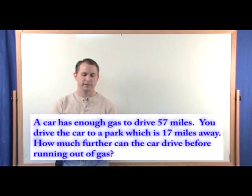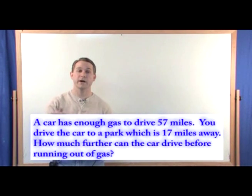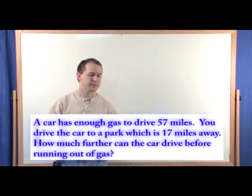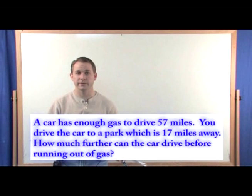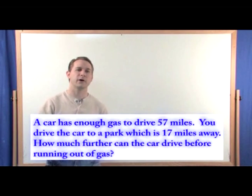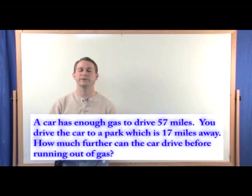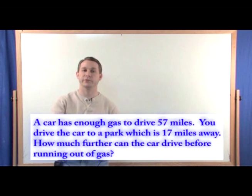So we're looking at two numbers. The car can drive 57 miles total before it runs out of gas, but you're not driving that far. You're only driving 17 miles. So you can still drive more because you've only gone 17 miles, but the car can go 57 miles. How much further can the car drive? So you have to subtract those two numbers to find out how much further the car can go.